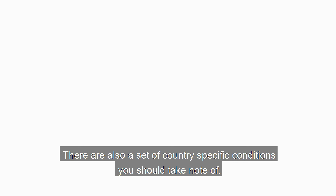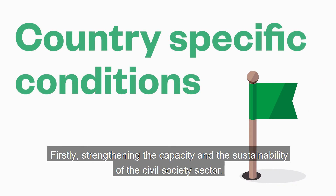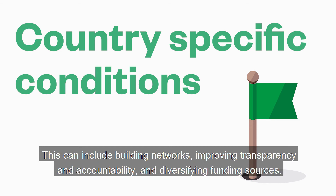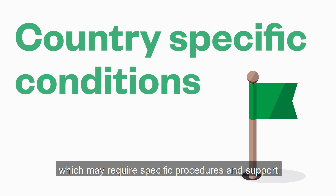There are also a set of country-specific conditions you should take note of. Firstly, strengthening the capacity and sustainability of the civil society sector — this can include building networks, improving transparency and accountability, and diversifying funding sources. Secondly, improving outreach to underserved geographic areas and target groups and smaller organizations, which may require specific procedures and support.